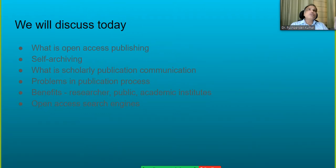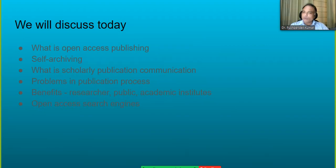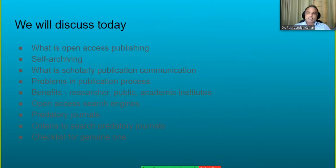And then, what are the different sources, different engines — for example when you want to search something, you search on Google engine. For articles, what are the different online platforms or online searching engines for different research papers that are openly accessible in online mode? We will also put some more light on predatory journals so that you will not indulge in any work which would be unethical. We will also cover criteria to search predatory journals and a checklist for genuine journals — how you identify which journal is genuine. So we will discuss these 7-8 points today.